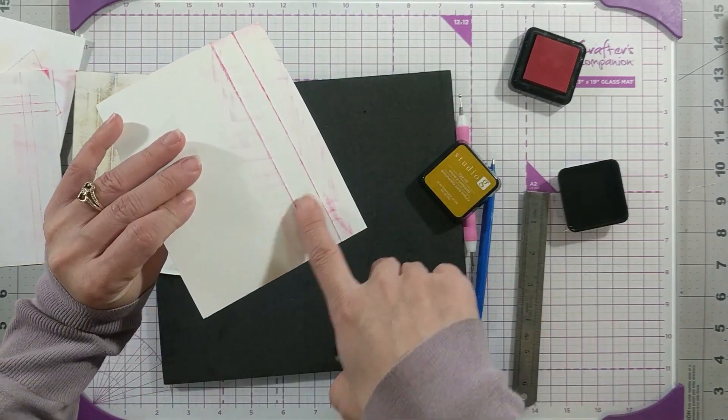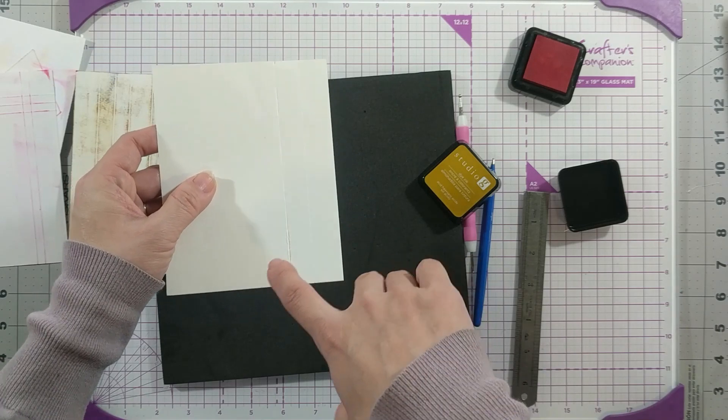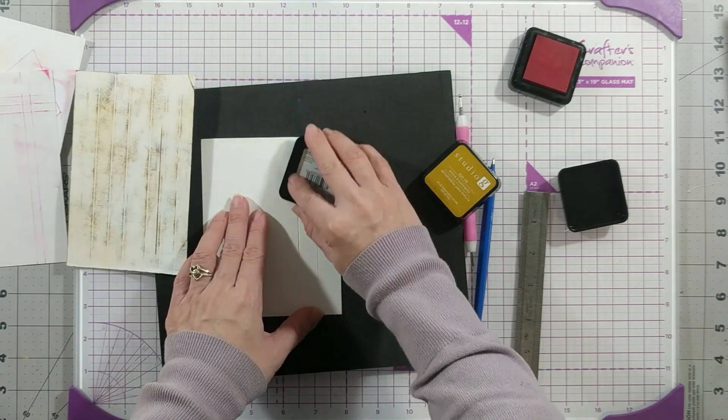So this is the embossed part; this one, the debossed part, I think that's how it's called.